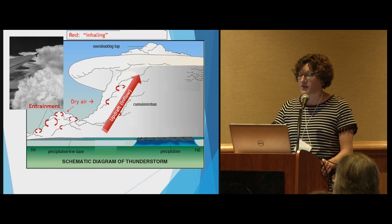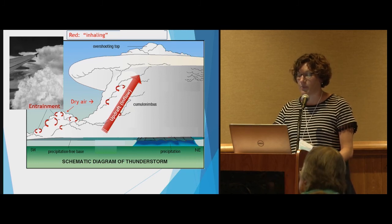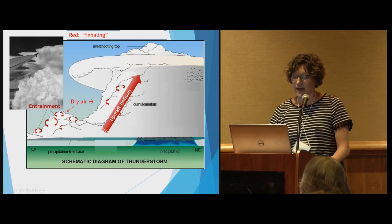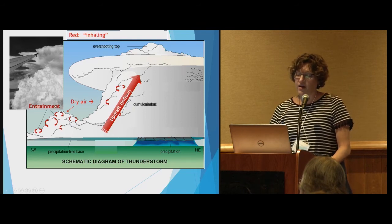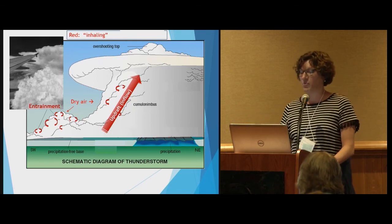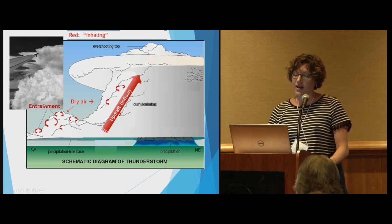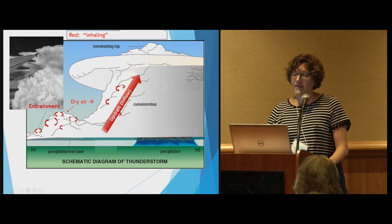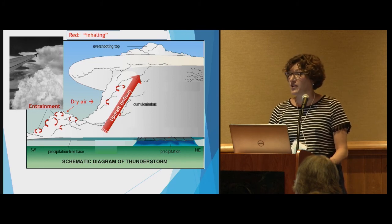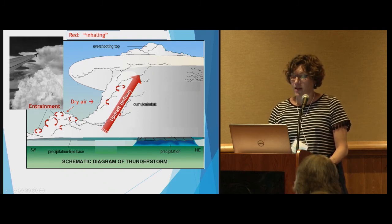To summarize what the talk is about: we're worried about the bringing in of air into a thunderstorm — the inhaling, so to speak, depicted in red on this diagram. There's major inflow coming into the storm, which is the fuel, bringing in hot, moist air. We also have injections of dry air into the cloud called entrainment, due to overturning eddy motions. That gives the cloud its cauliflower appearance. We need really high resolution to study this because we need to directly represent as many of these eddies as possible.